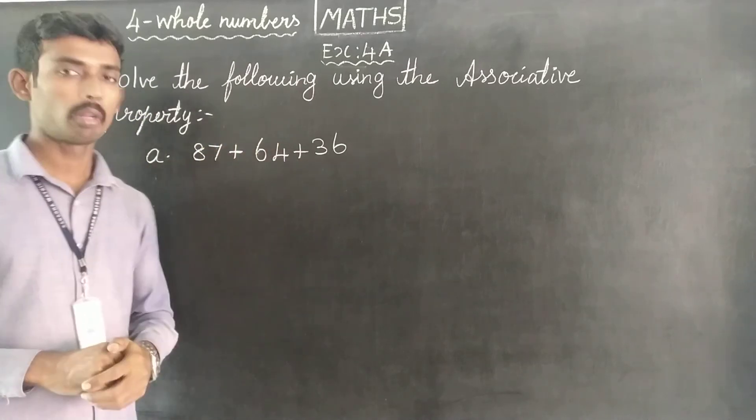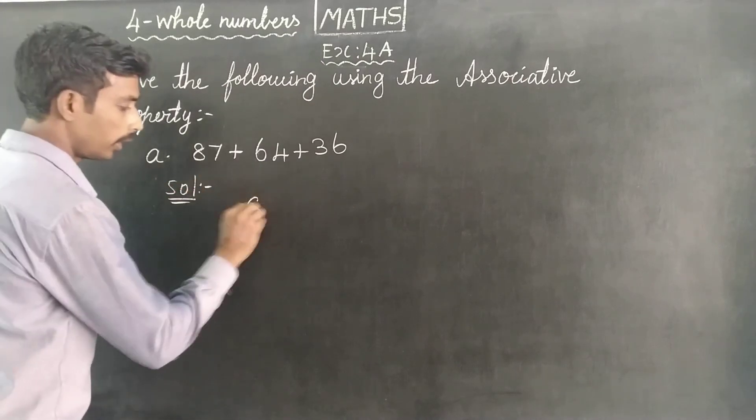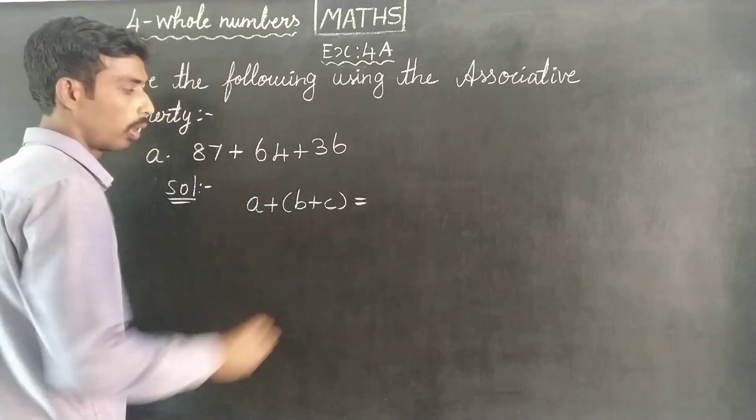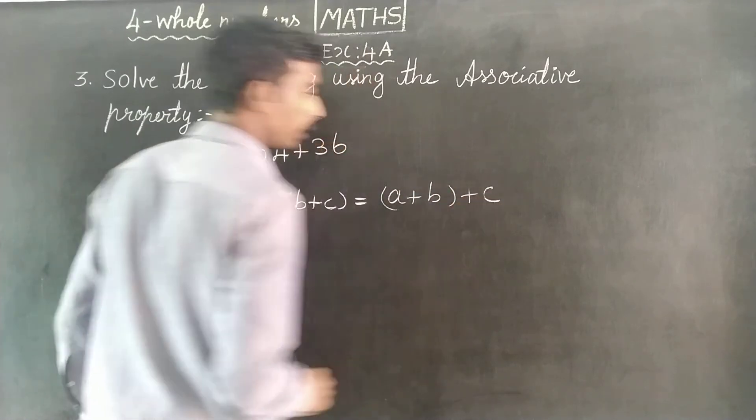Associative property, the formula is, solution: a plus b plus c equals a plus b plus c.